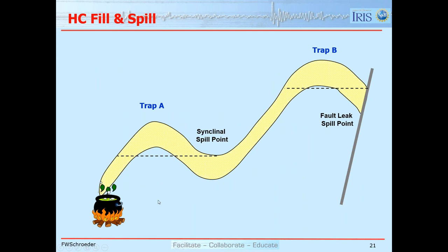Let's talk about hydrocarbon fill and spill. The yellow band represents an interval with good porosity and permeability — that will be both my migration route and my reservoir rock. Above the yellow, we'll assume there's a fantastic seal. Hydrocarbons are generated, percolate up, and move up-dip to the top of trap A. By buoyancy, the hydrocarbon fills trap A down to the dotted black line — the low point in the syncline, called the synclinal spill point. If hydrocarbon fills to this level and we keep adding more, it will find that it can rise higher along the migration path and get to trap B.